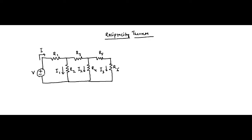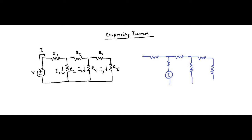Now suppose we shift the position of this voltage source — we shift it to this point. Let us redraw the circuit with the voltage source shifted. This is R1, R2, R3, R4, R5, and R6.